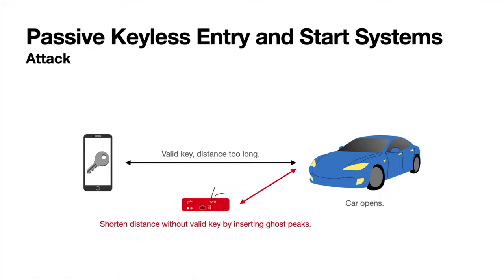However, an attacker can insert ghost peaks during distance measurement. These peaks cause random fake paths that can appear as valid shorter paths.